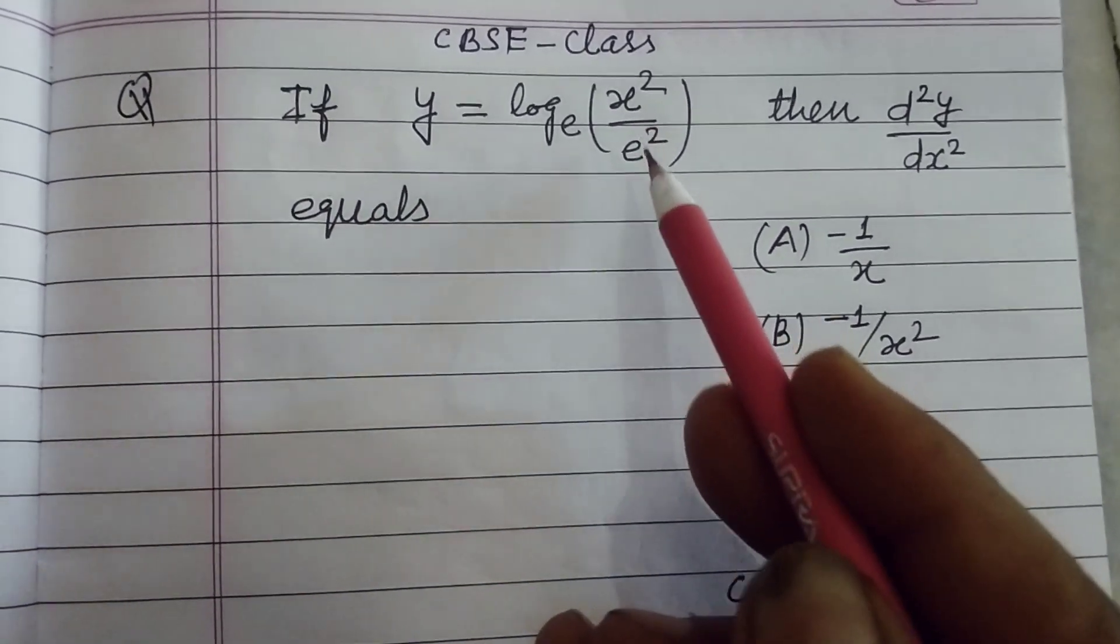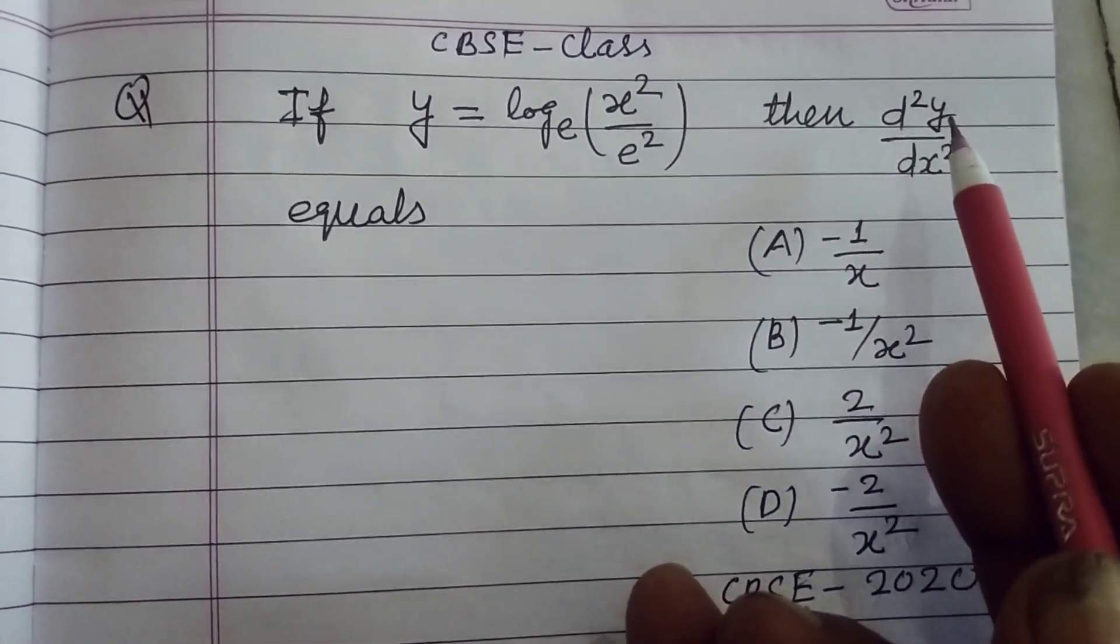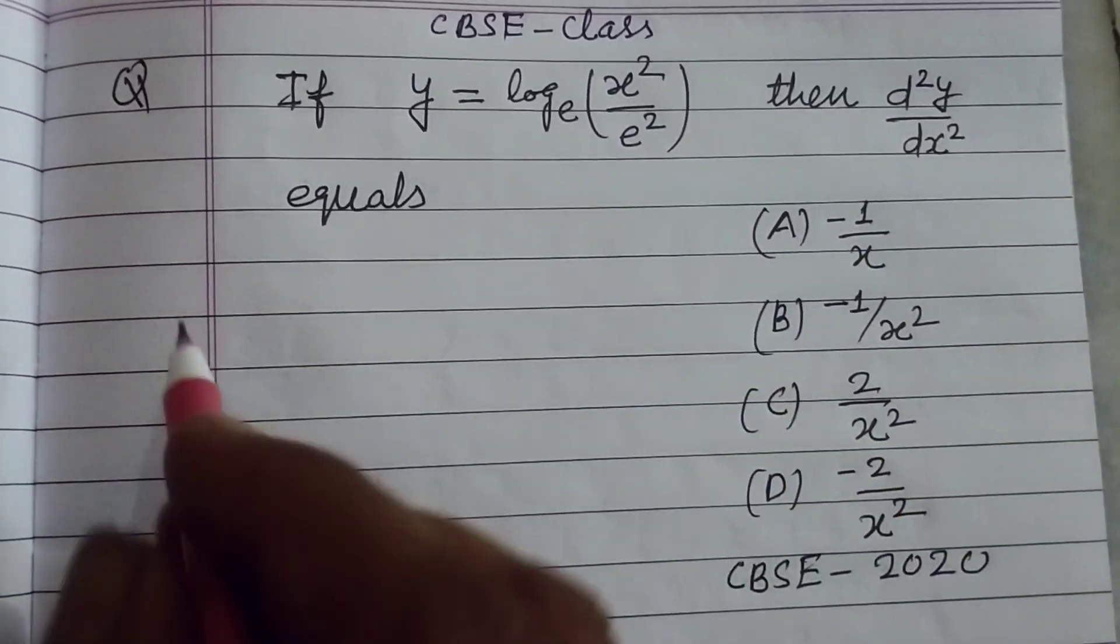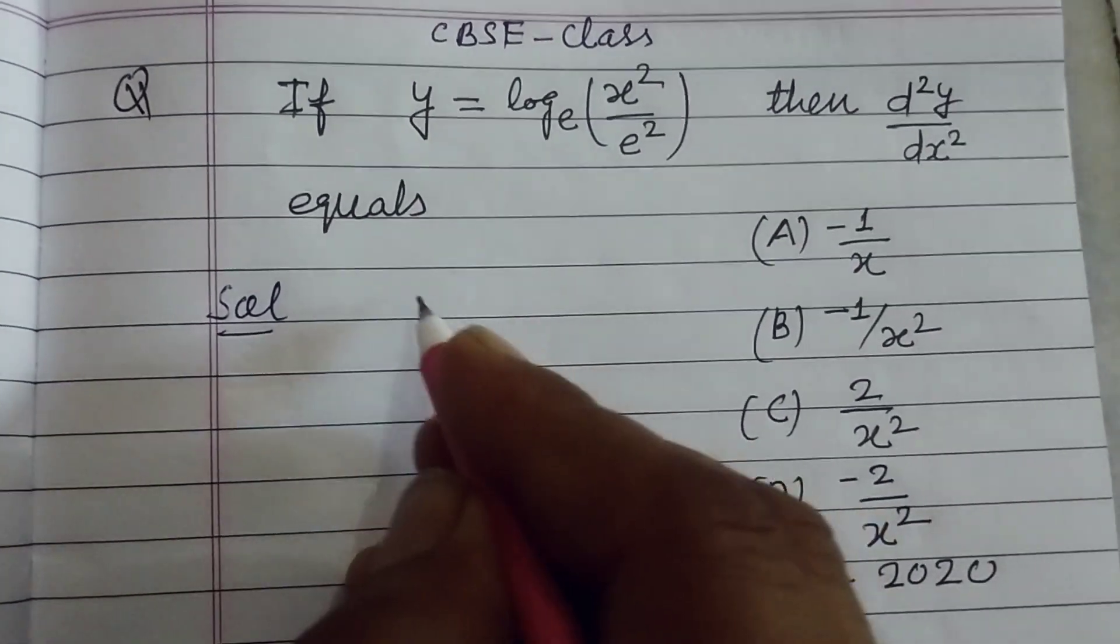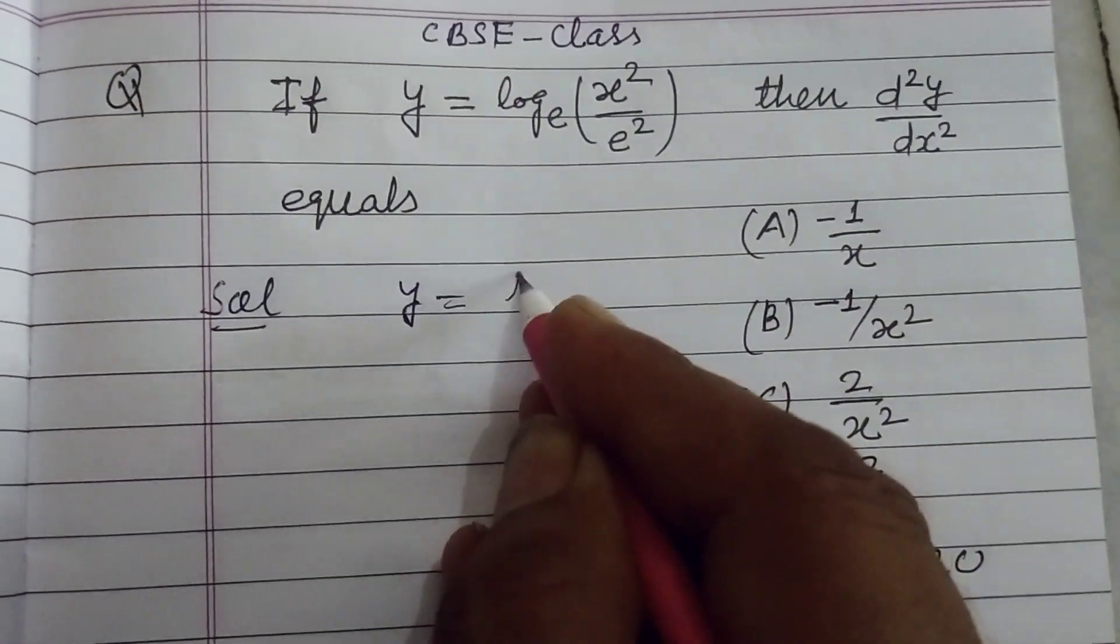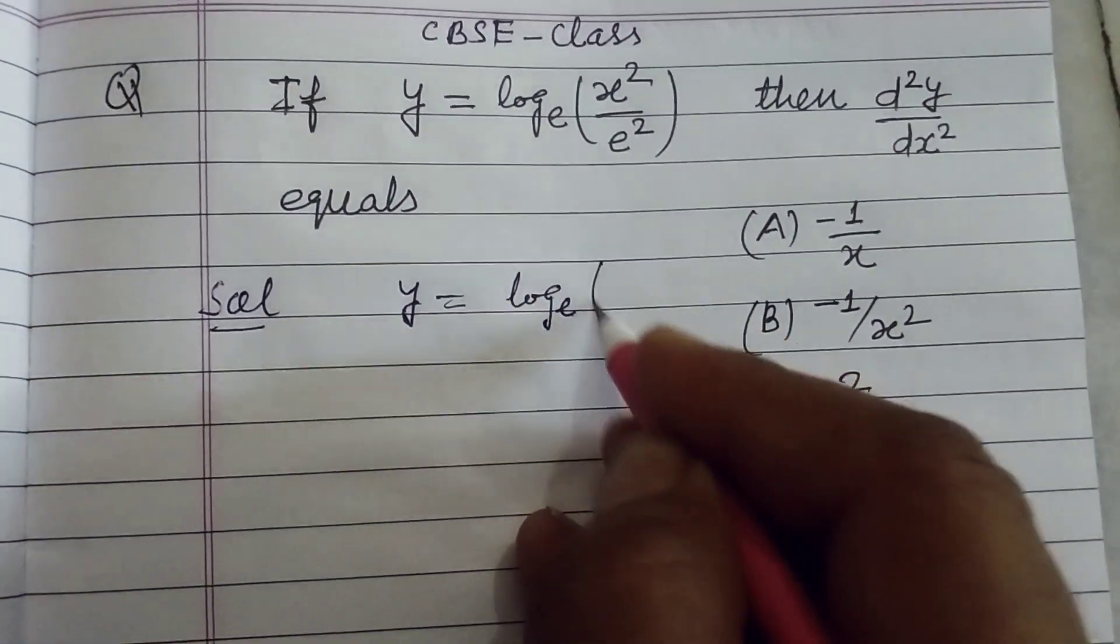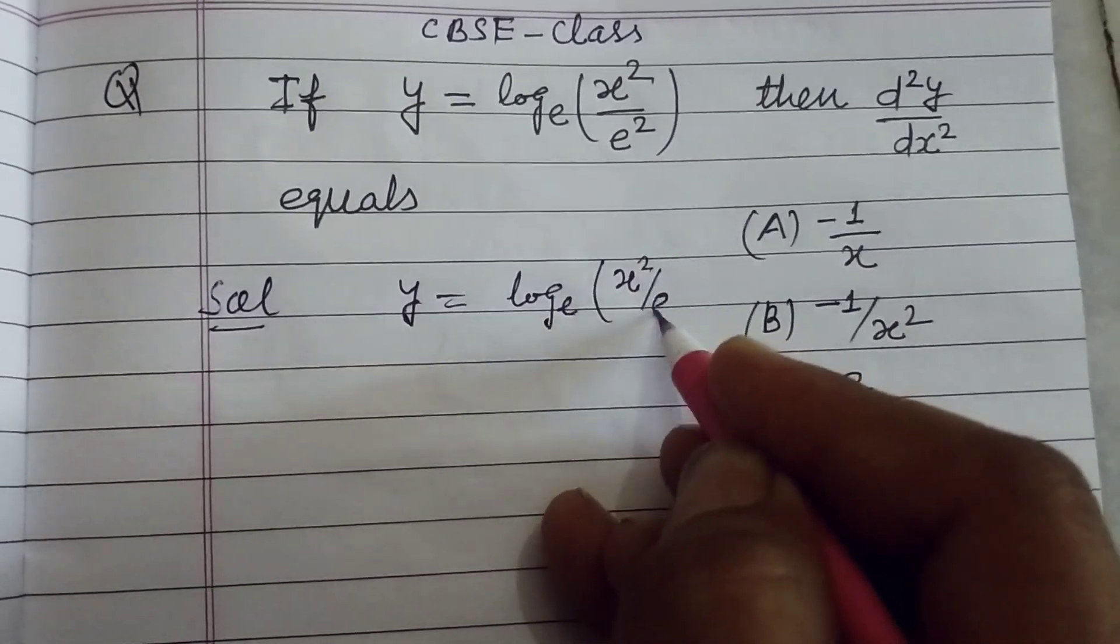If y equals log base e of x squared over e squared, then d squared y over dx squared is equal to. So student, here we take y equals log base e of x squared over e squared.